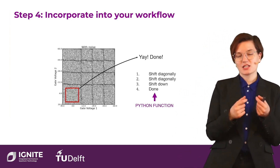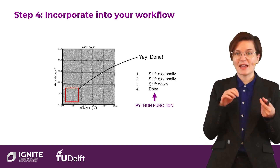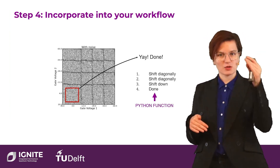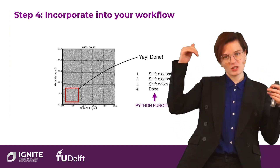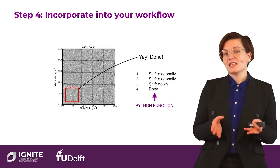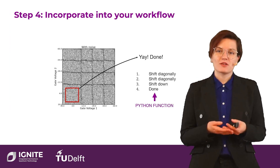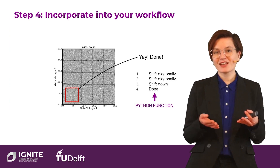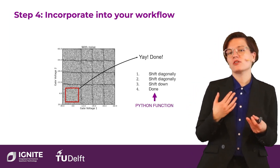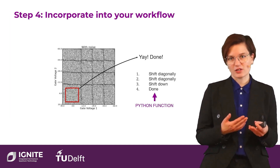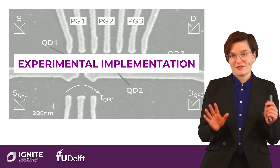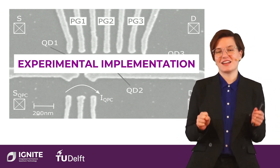What the neural network does is just this local classification of the measurement window. It is your job as an experimentalist to write a Python script around this classification that takes the output — for example, 'it's a both-line' — and tells your plunger voltages to shift diagonally in the charge stability diagram. There are some subtleties: if you pick your measurement window too small, there is a high probability you will measure in a place with no transition. There are a few hyperparameters that with your physics knowledge you need to adjust before training, so you don't introduce biases that corrupt the classification. With that, we are done and can move on to how this is done in an actual experiment.